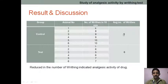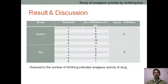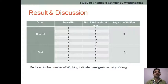What does this mean? The number of writhings is reduced. Reduced writhings means the test drug is showing analgesic activity, and it is producing that activity through a peripheral mode of action. If the writhings are not reduced compared to control, then we have to say that the drug does not have any analgesic activity.